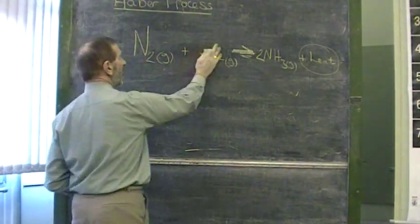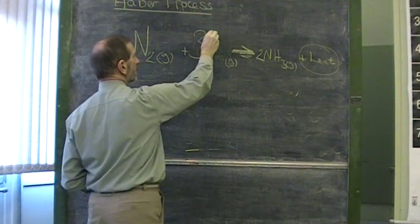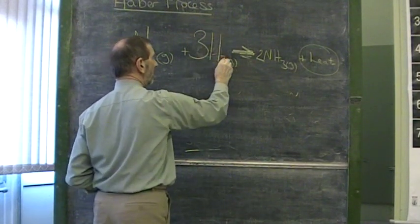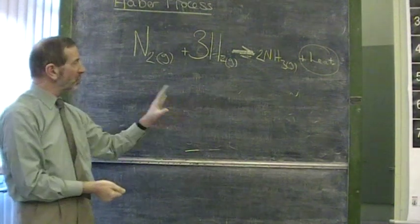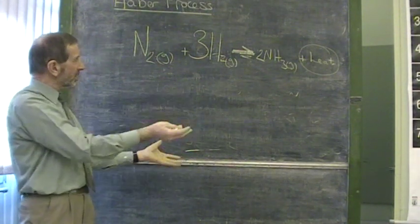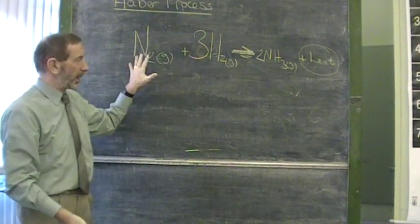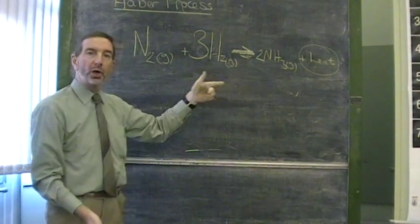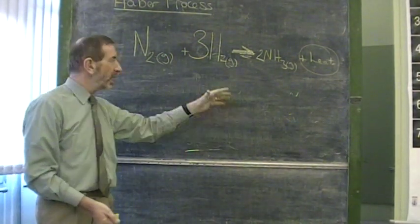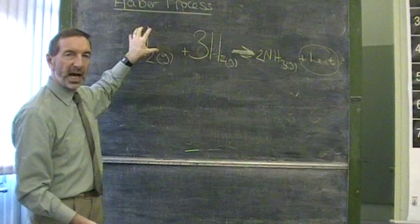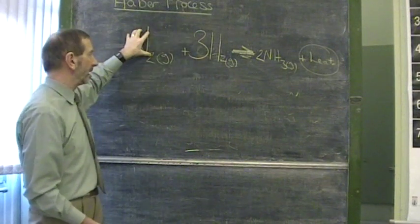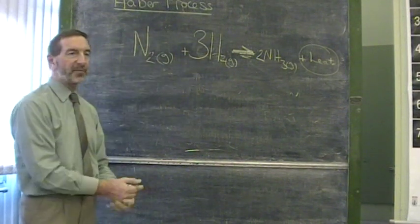You might recall, one way of doing that would be to upset the balance by having large quantities on this side. If we have large amounts of nitrogen and large amounts of hydrogen, the system will be encouraged to use those up. We've upset the balance. The only way to use up this imbalance is to shift to the right. So you can be sure that in the Haber process, the concentrations of nitrogen and hydrogen are kept high.